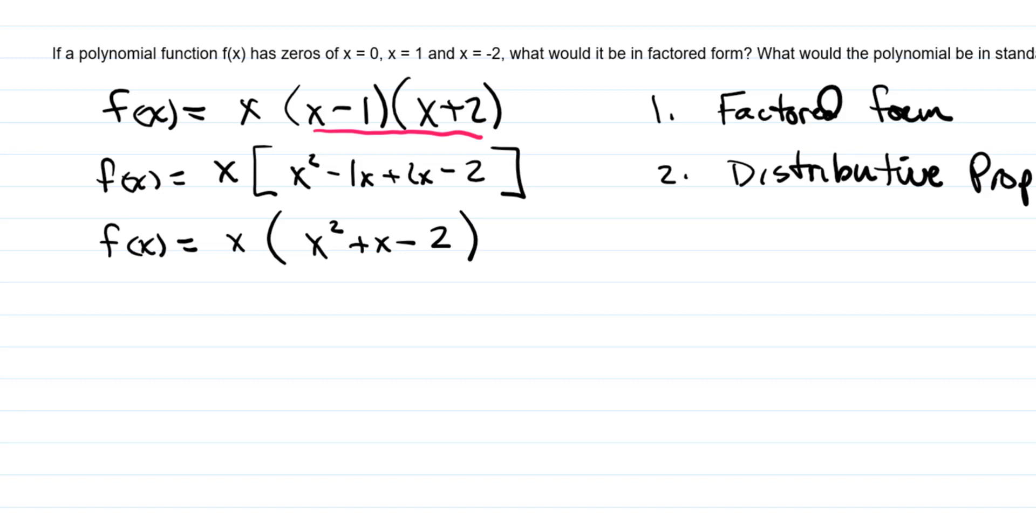And then the last thing I'm going to do is take the x that is on the outside and distribute that into each one of the terms on the inside of the parentheses. So that's going to give me x cubed plus x squared minus two x. And that very last part right there is going to be the standard form.